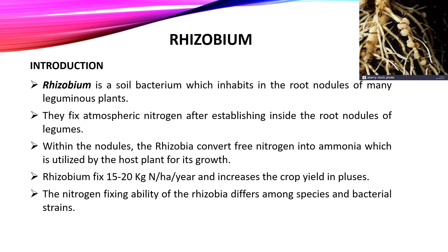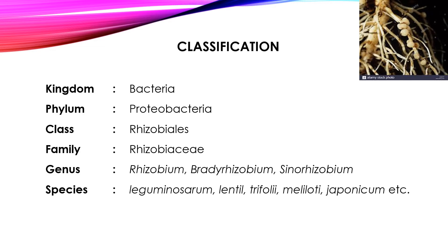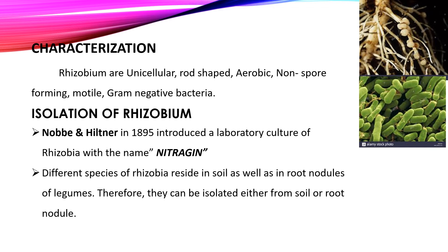The nitrogen-fixing ability of rhizobia differs among species and bacterial strains. Classification of Rhizobium: Kingdom Bacteria, Phylum Proteobacteria, Class Rhizobiales, Family Rhizobiaceae, Genus Rhizobium, Bradyrhizobium, and Sinorhizobium, Species: leguminosarum, lentil, trifoli, meliloti, japonicum. Rhizobium are unicellular, rod-shaped, aerobic, non-spore-forming, motile, gram-negative bacteria.